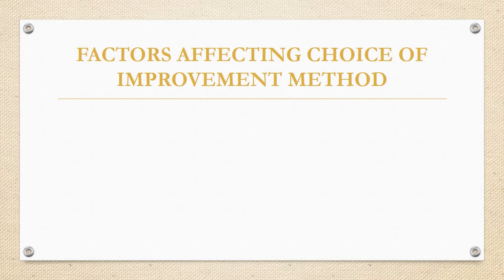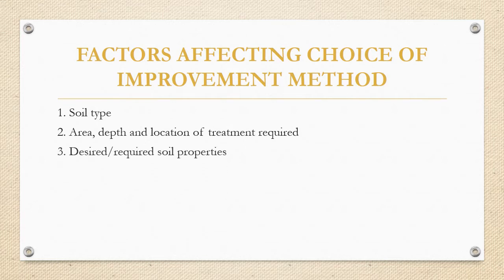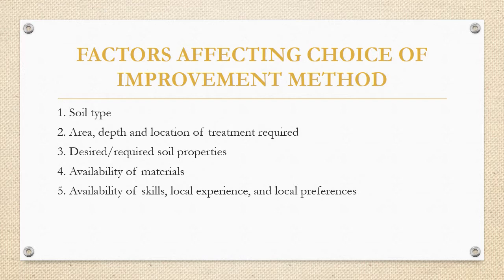The factors affecting the choice of ground improvement method include: first, the soil type; second, the area, depth, and location of treatment required; third, the desired soil properties to be improved; fourth, the availability of materials for improving the ground; fifth, the availability of skilled labor, local experience, and local preferences; sixth, environmental concerns; and seventh, cost-effectiveness or economics.